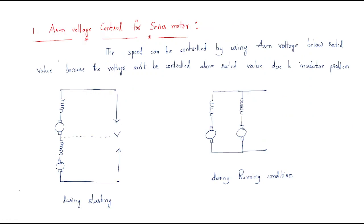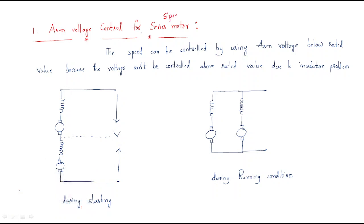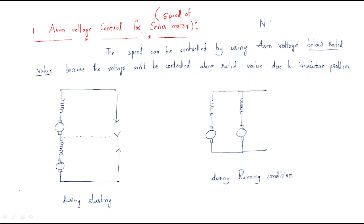Next, the subtopic is armature voltage control for series motor — how we can control the speed of a series motor. In the series motor, the armature and field are series connected. The speed can be controlled by using armature voltage below the rated value only — speed control is possible only below rated value, not more than rated, because the voltage can only be controlled below the rated value.